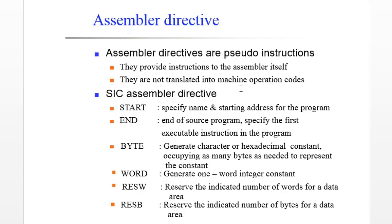Some assembler directives that we are going to use in our SIC program are listed here, and we will add a few more as we proceed in our course. The first one is START — this is an assembler directive which will specify the name and starting address for the program. And END indicates the end of the source program.